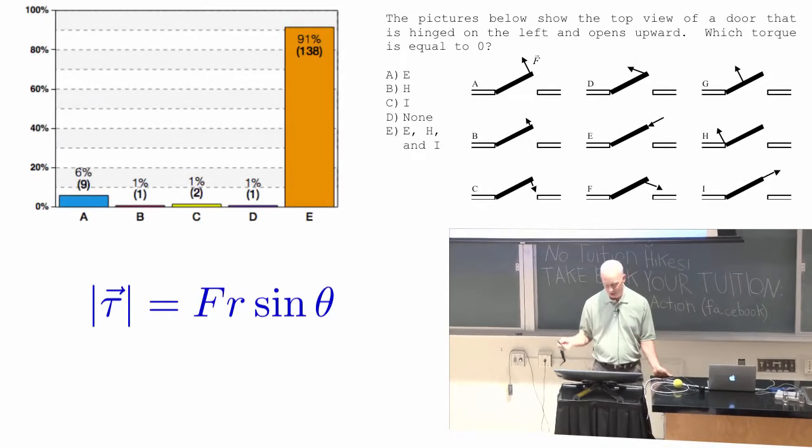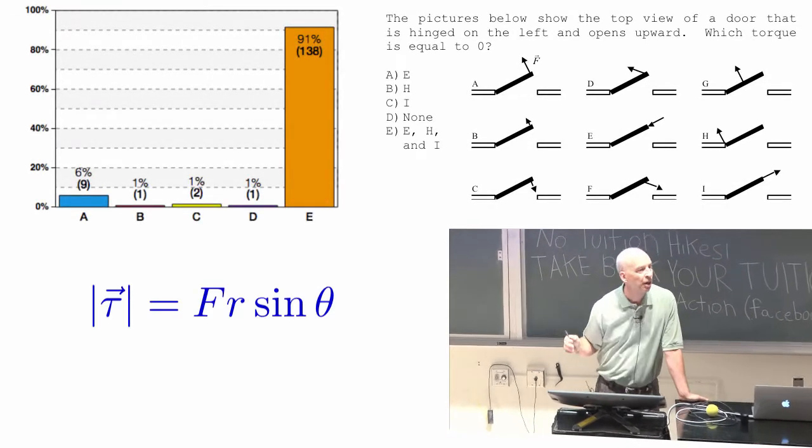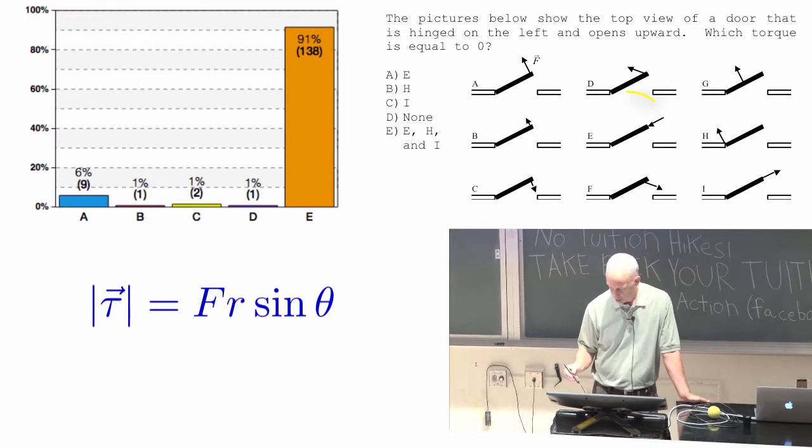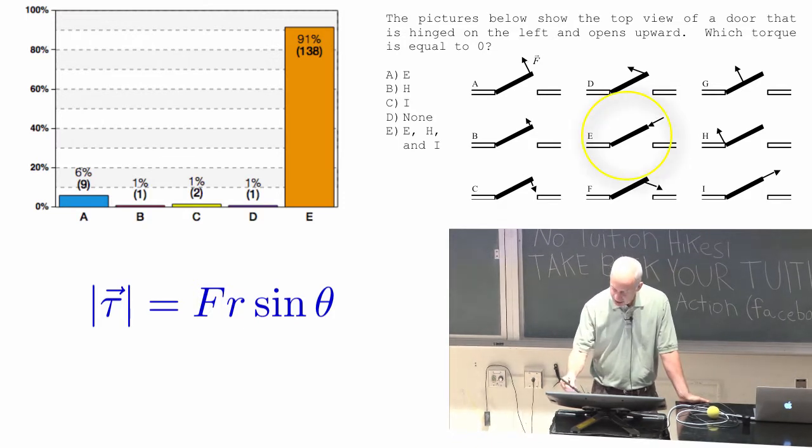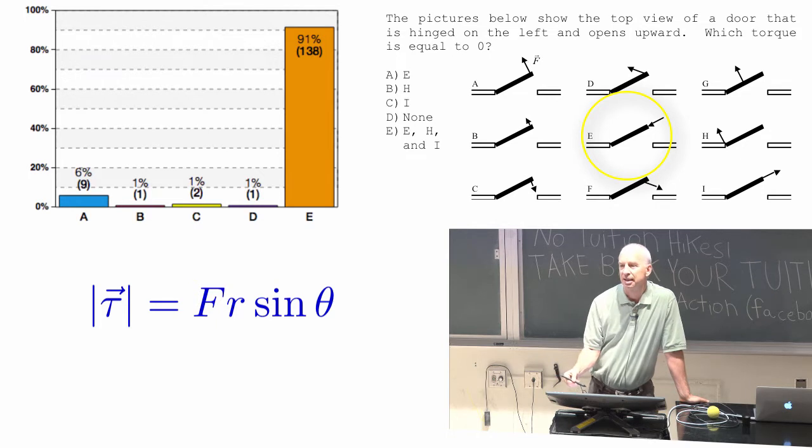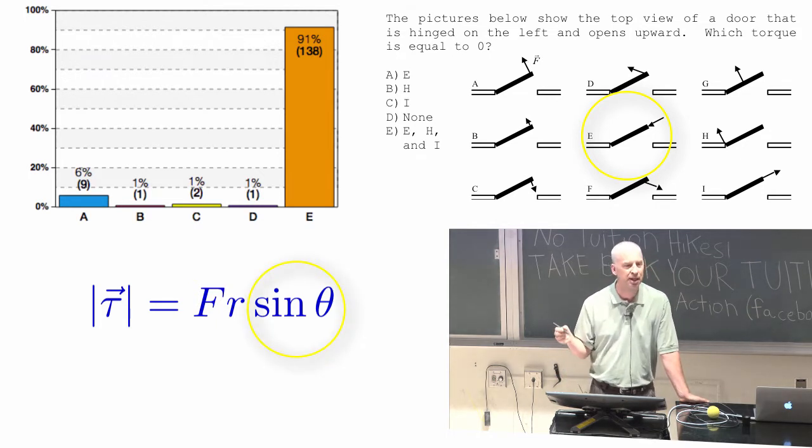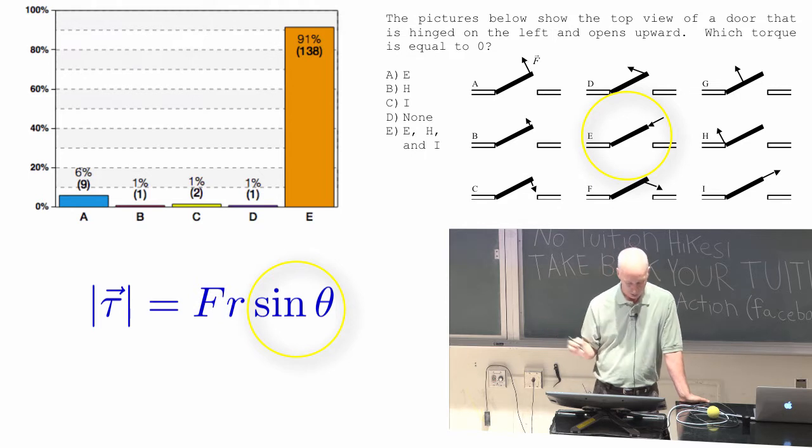Okay, so the best answer was, in fact, E, H, and I are all zero. What about E? E is zero, we already talked about that, because theta is 180 degrees and the sine of 180 degrees is zero. So the sine here is zero for E.